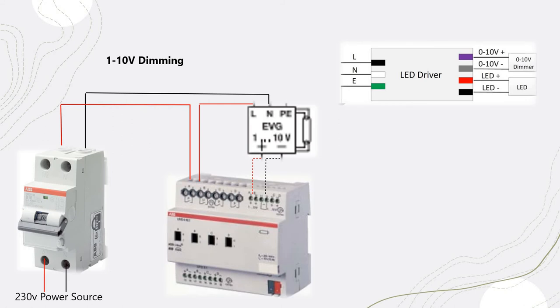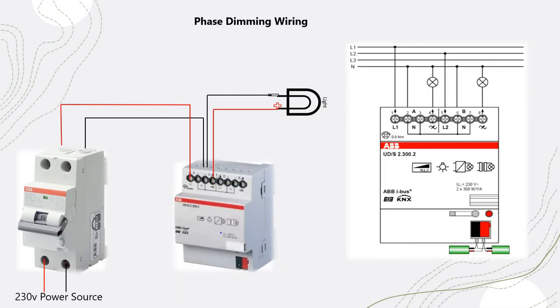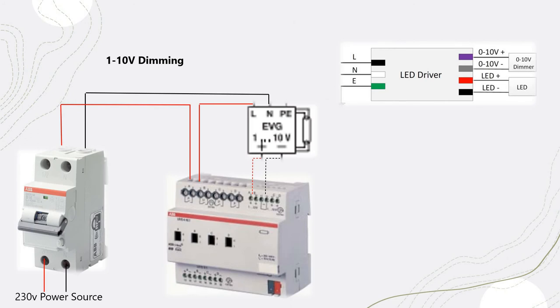For 1-to-10V dimming — mainly seen in hospitality projects but also usable for home automation — it's a wonderful and cost-effective solution, less expensive than phase dimming. The wiring requires a little extra cable, but it provides excellent dimming results. You can also use it as an actuator to turn on and off the light. The concept differs slightly from phase dimming.